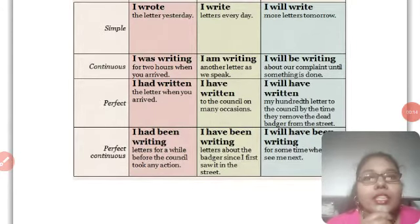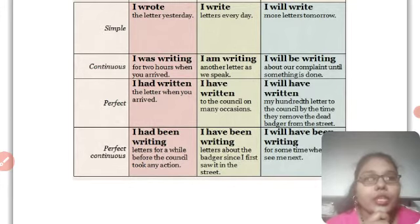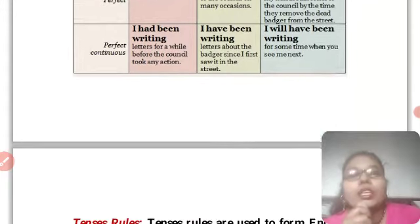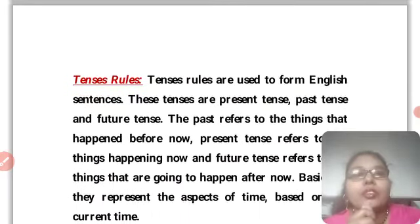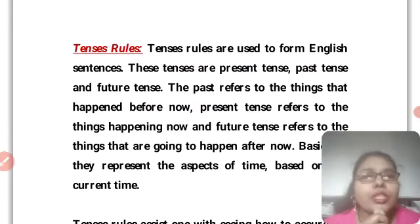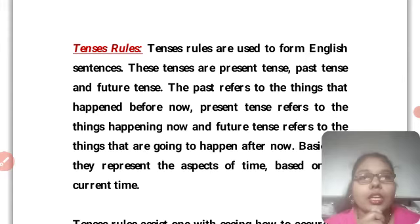Last class mein hama log continuous perfect aur perfect continuous ko par chuke the — jo past tense, future, aur present tha. To hama log chaliye shuru karte aur aage is ke baare mein rules of tense dekhte hain. Tense ka kya kya rule hai aur use kahan aur kis tarah se use karna hai, uske baare mein yaha pe detail mein diya hua hai.